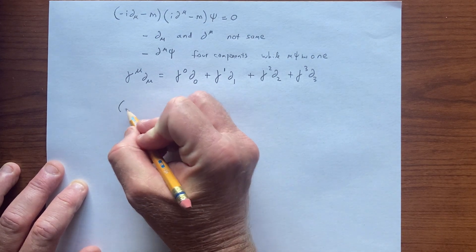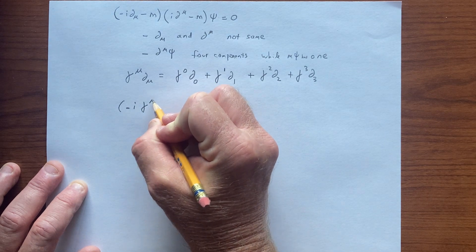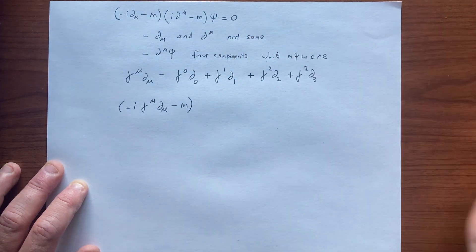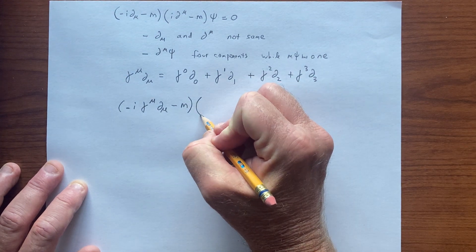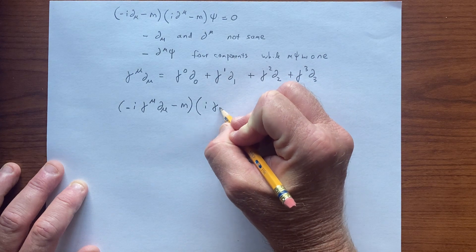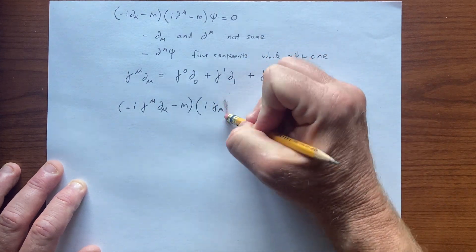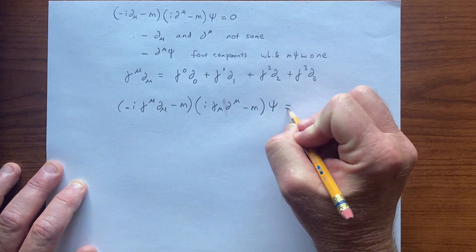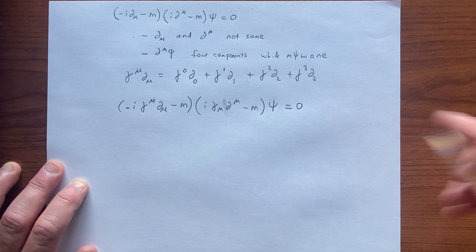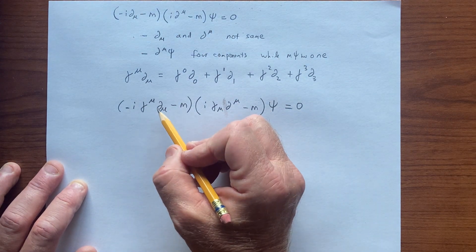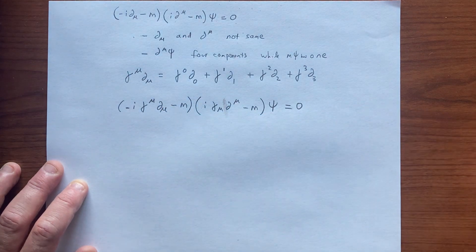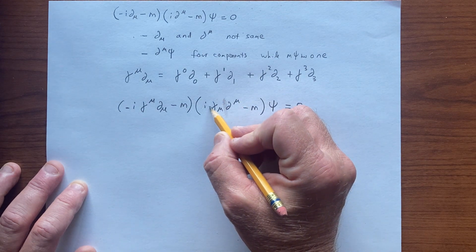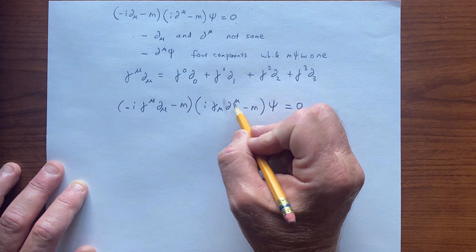So we try to build something like that, and we're led to considering (gamma^mu d_mu - m)(gamma^nu d_nu - m)psi = 0. Of course, we're going to multiply these two things, and we want to get the Klein-Gordon equation. We see upper and lower, so we flip these two using the metric tensor to raise this index and lower this one.